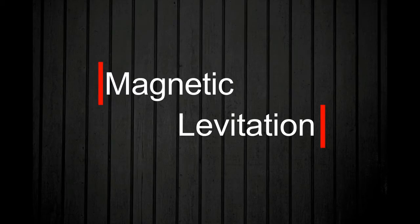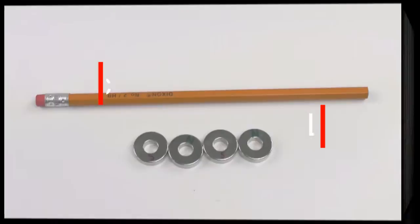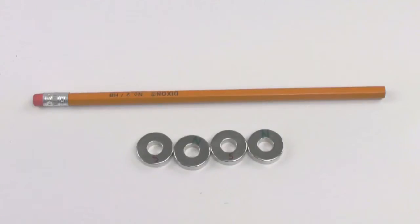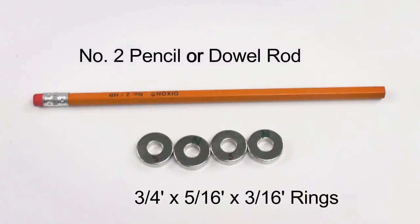Here are some simple examples of magnetic levitation and repulsion using rare earth magnets. Here we have a number two pencil and neodymium ring magnets.